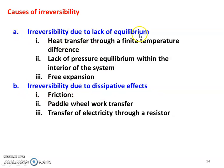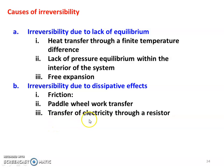Irreversibility due to lack of equilibrium has three sub-causes: heat transfer through finite temperature difference, lack of pressure equilibrium within the interior of the system, and free expansion. Irreversibility due to dissipative effect includes: friction, paddle wheel work transfer, and transfer of electricity through a resistor. We will discuss the details of all six reasons.